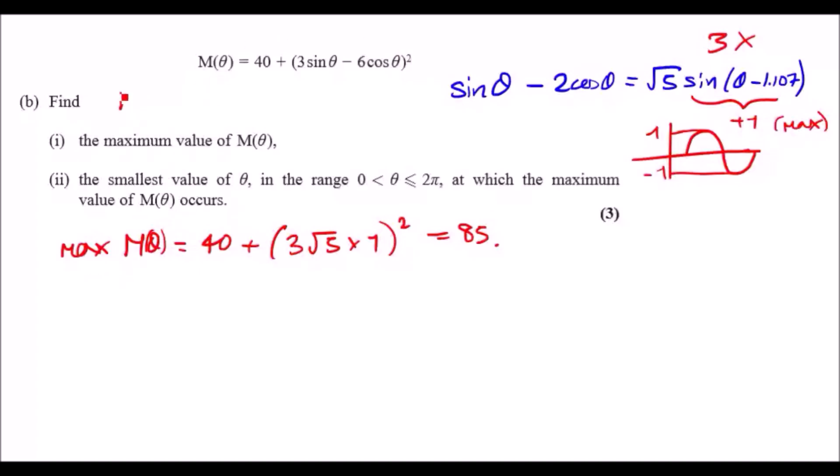So again, rewrite the equation neatly. So we're going to have M(θ) equals 40 plus, and instead of the expression here, it's going to be 3√5 sin and then blah blah blah, all squared. Just leave three dots that represents everything inside there, θ minus 1.107.